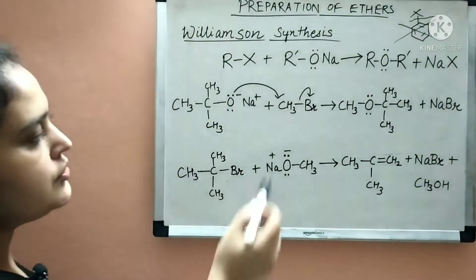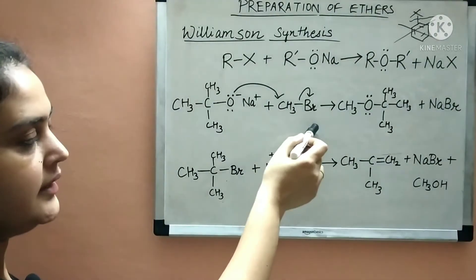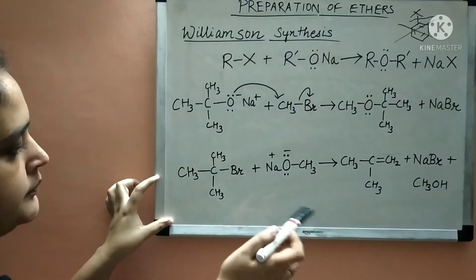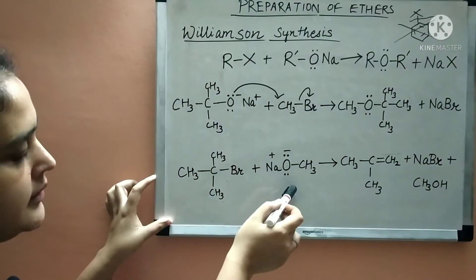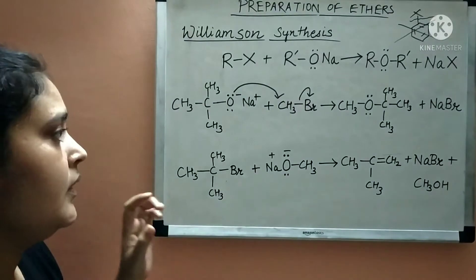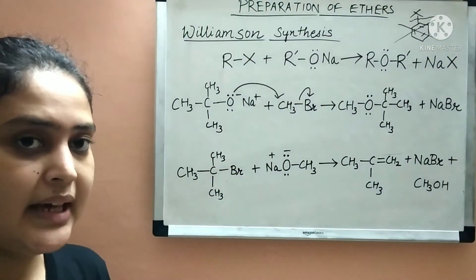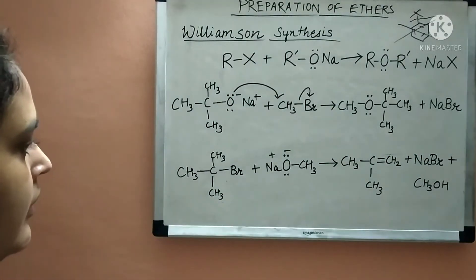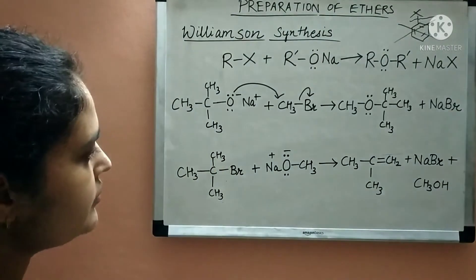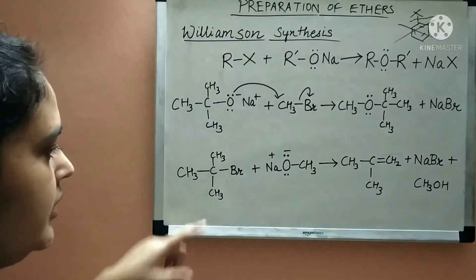Now, if you were to use a tertiary alkyl halide instead, there will be no substitution reaction. Instead, an elimination reaction will occur. Why? Because there is steric hindrance on the tertiary alkyl halide, so the nucleophile will not be able to attack and substitute to form ether.